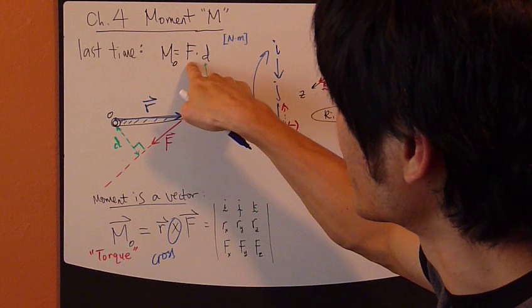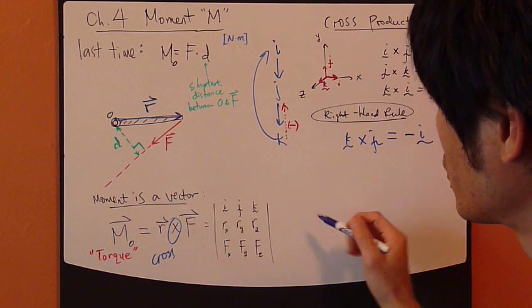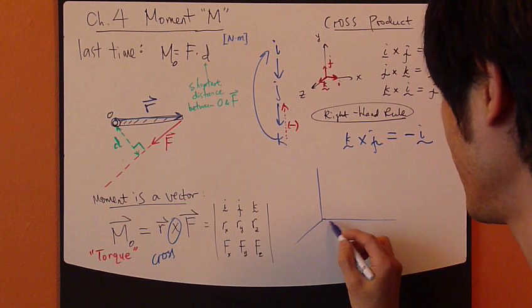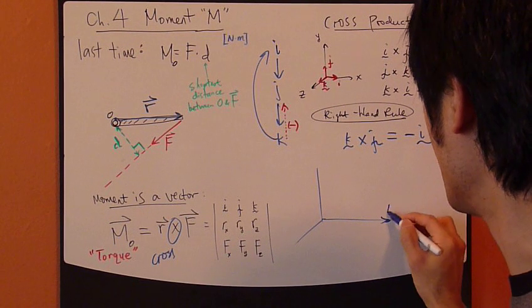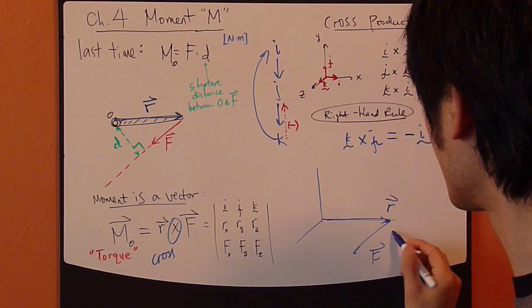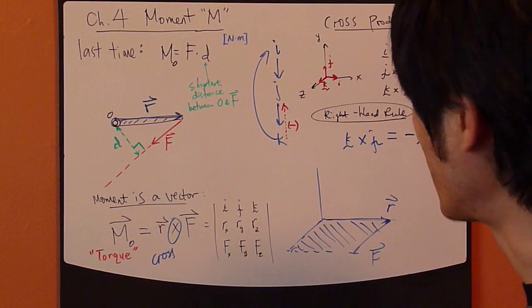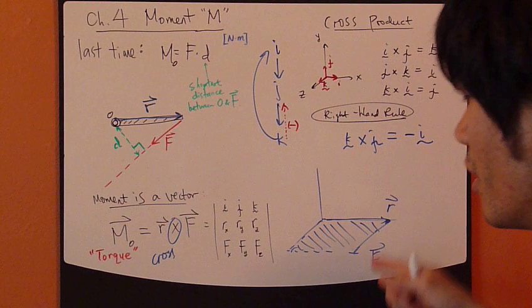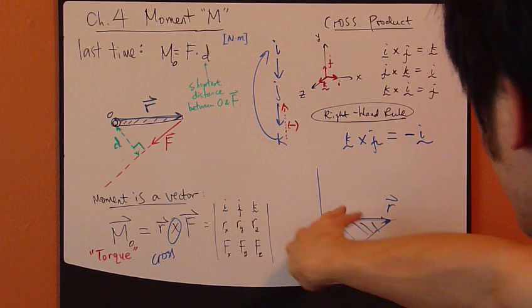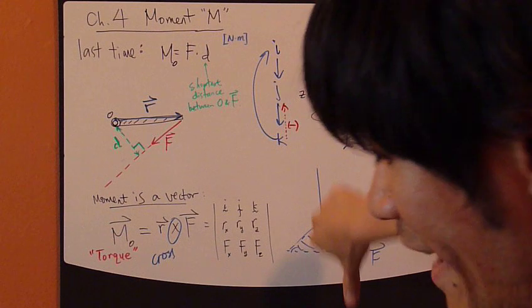When you take this force magnitude and multiply that with the shortest distance, it actually gives you the area of the parallelogram. So let's say this is your R. Then let's say this is my F. So if you take the magnitude of R and this F, this area right here is the magnitude of moment.